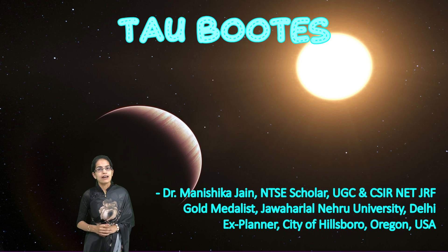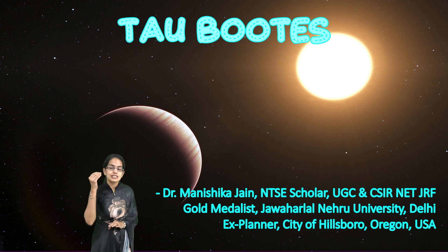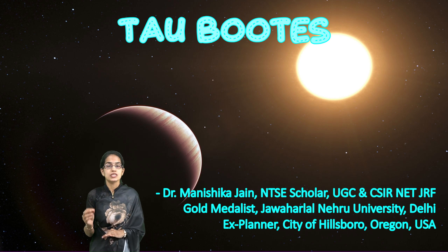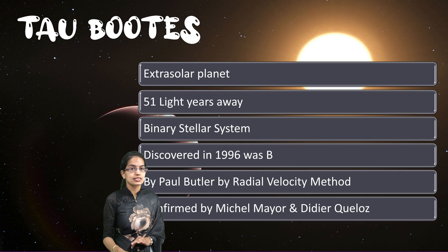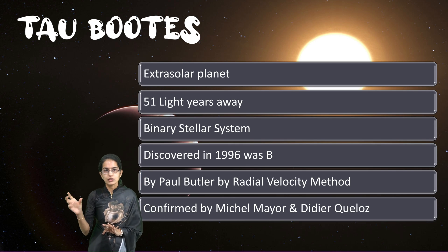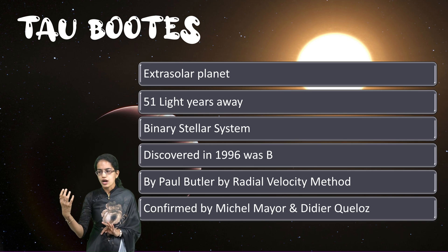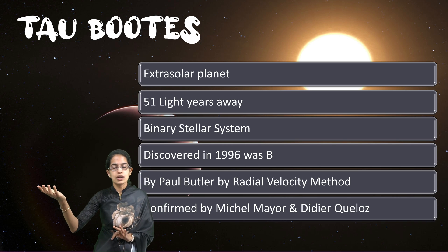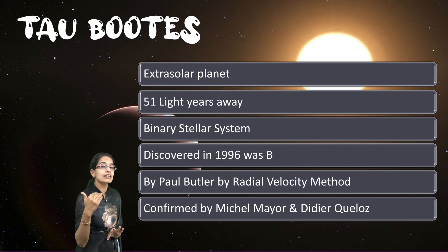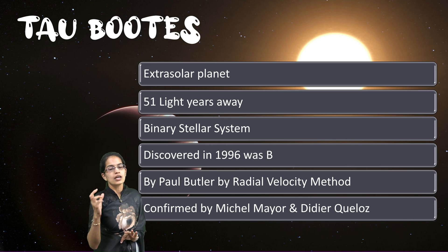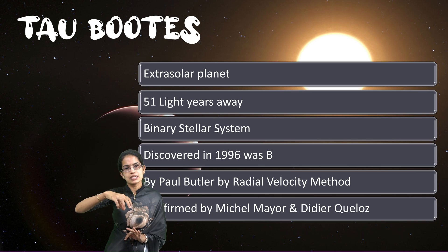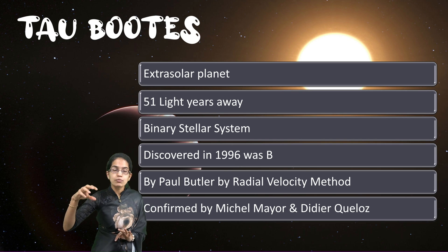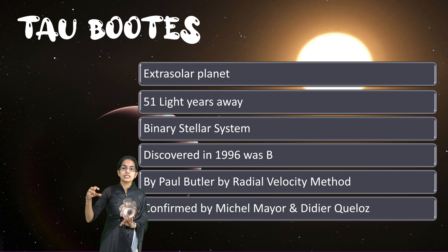One of the major exoplanets that have been discovered, linked to the possibility of habitation, is Tau Boötis. Tau Boötis is one of the binary star systems — you have two stars, one is the primary star, and the exoplanet is attached to the primary star. This is present in extrasolar space and is nearly 51 light years away from Earth. The primary star A was discovered first, and later through the radial velocity method, Tau Boötis B — the exoplanet — was discovered.